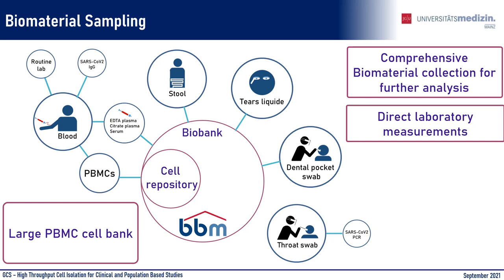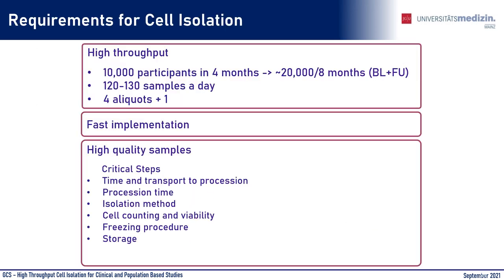However, there were some challenges in implementing this large project. First, the very high throughput: two visits with 10,000 planned participants each in only eight months, meaning 120 to 130 samples per day, and a very short preparation time of less than three months. Although we mostly received students from science programs, the staff was rather inexperienced in cell isolation. And of course, the already known critical steps of every biobanking of living cells: time and transport to processing, processing time, isolation method, cell counting and viability, freezing procedures, and storage.